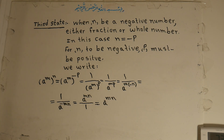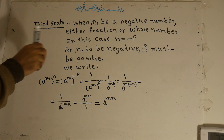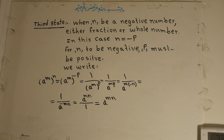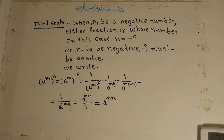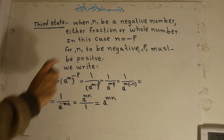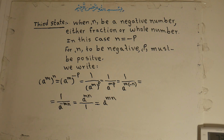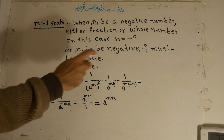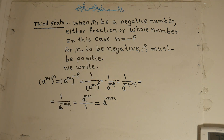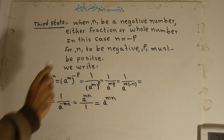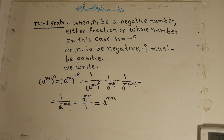Third case: when n is a negative number — either a fraction or a whole number. n equals negative p. For n to be negative, p must be positive; if p is positive, then n must be negative.